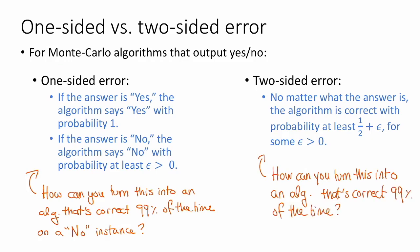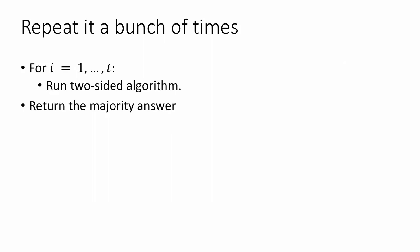That is, we can ask the same question, how can you amplify an algorithm with this guarantee into something that's correct 99% of the time, and we're going to have the same answer. That is, we're going to repeat it a bunch of times. So in this case, the algorithm is going to look like this. For i equals one to t for some parameter t that we'll choose in a moment, let's run that two-sided algorithm and just take majority vote. If it says yes more than half the time, output yes. If it says no more than half the time, output no. So I claim that this also successfully boosts the success probability to something really big.